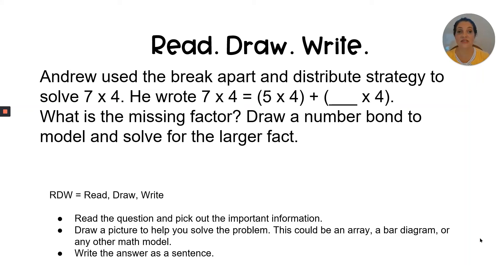All right, let's put this to the test with a read, draw, write question. Remember, we'll do this one together, and then I'll give you one to do on your own. Read, draw, write is sometimes called the RDW process. We read the question and pick out the important information. We draw a picture to help you solve the problem, and then you write the answer as a sentence, and you would like to have a complete sentence that uses part of the question in the answer, as well as explaining how you arrived at your solution. So we'll do this one together. So I'll begin by reading and annotating the question. Andrew used the break apart and distribute strategy to solve seven times four. He wrote seven times four equals four times four plus blank times four. What is the missing factor? Draw a number bond to model and solve for the larger fact.